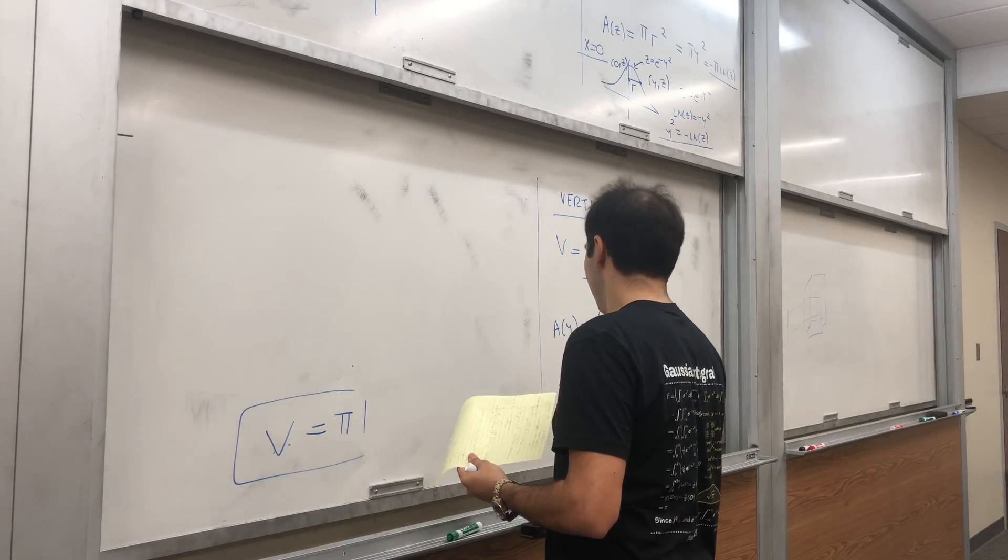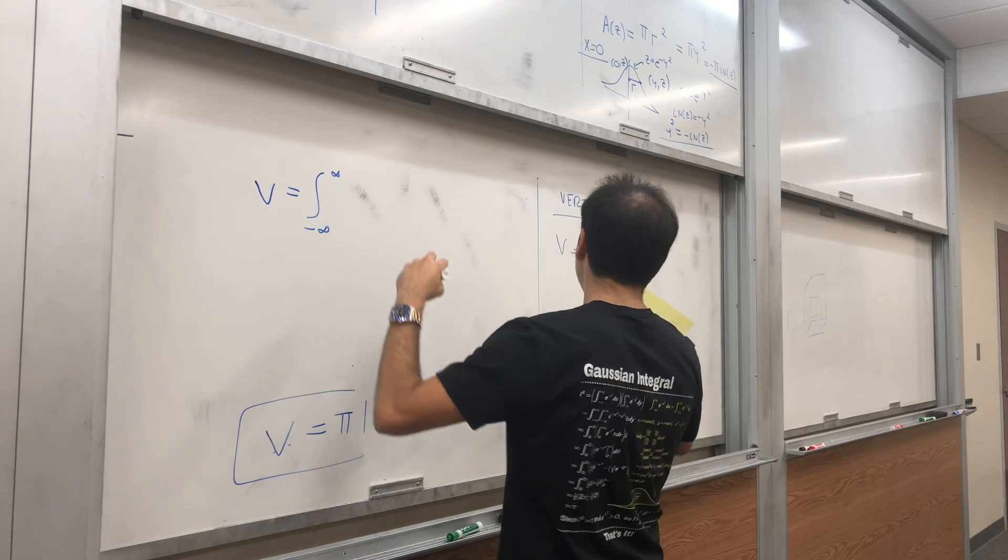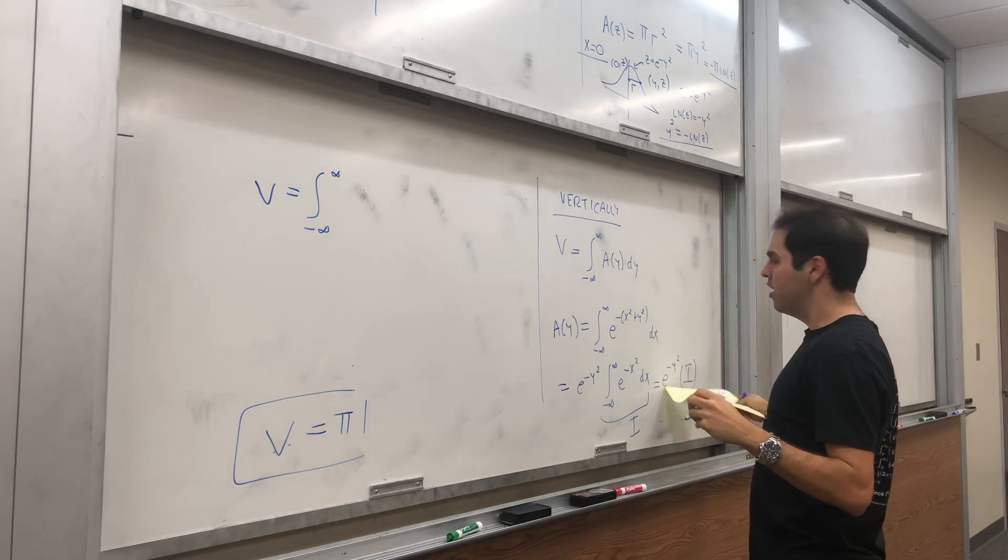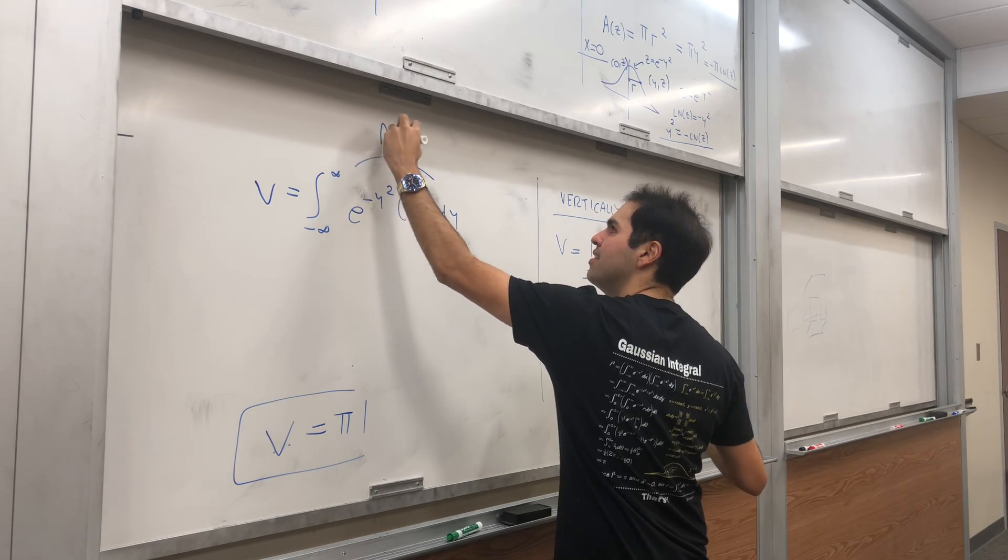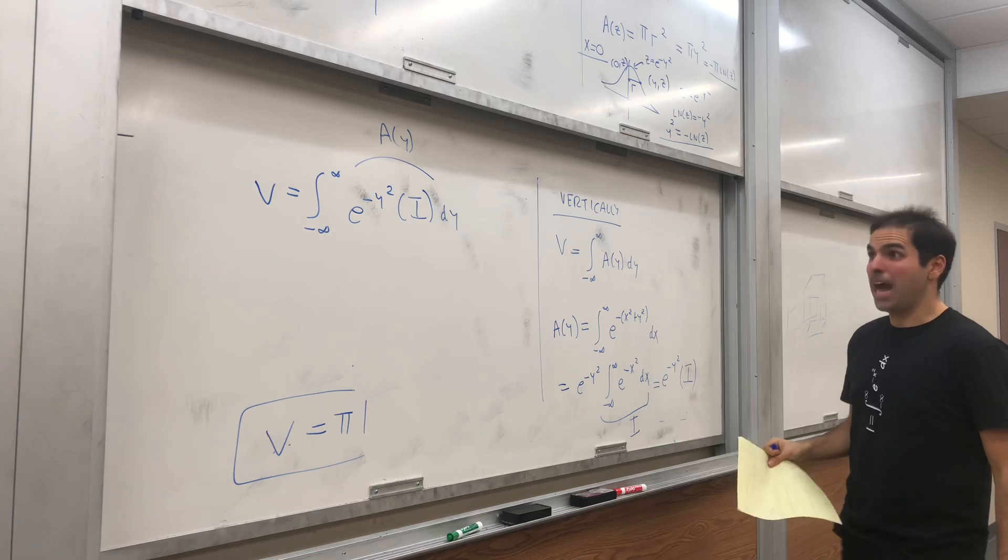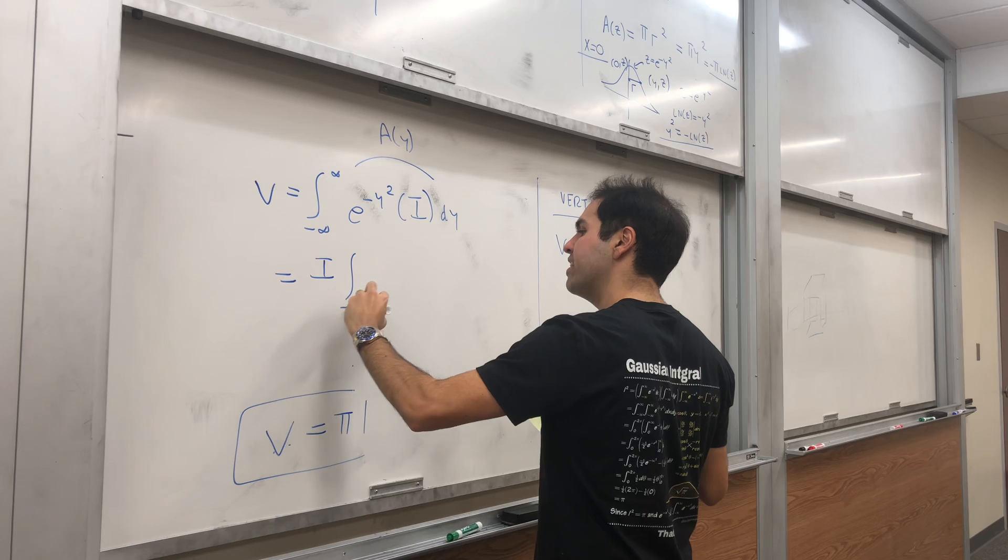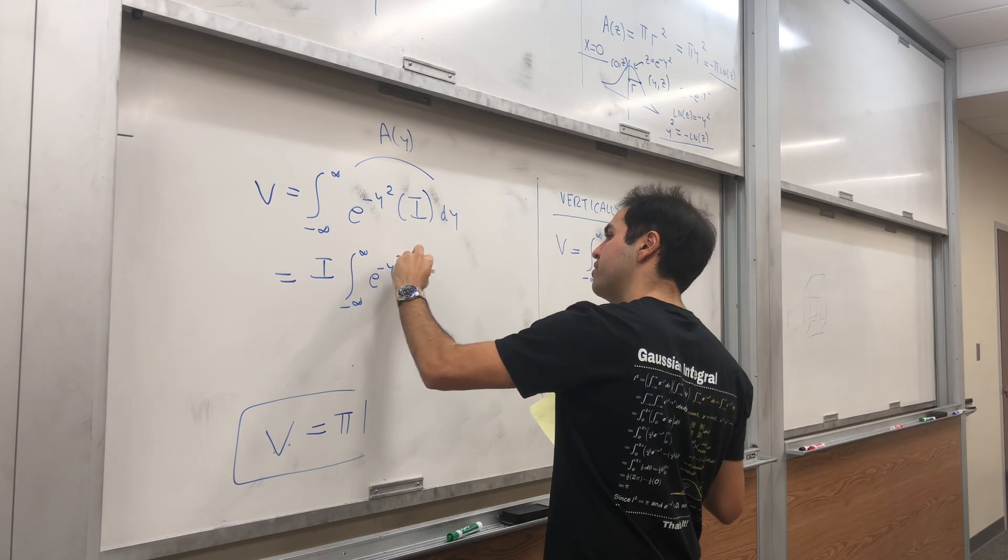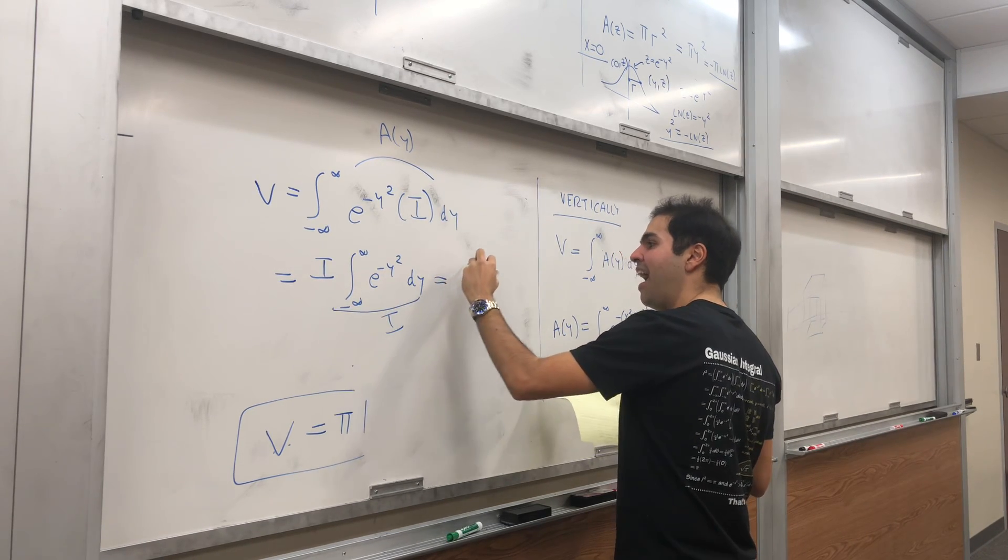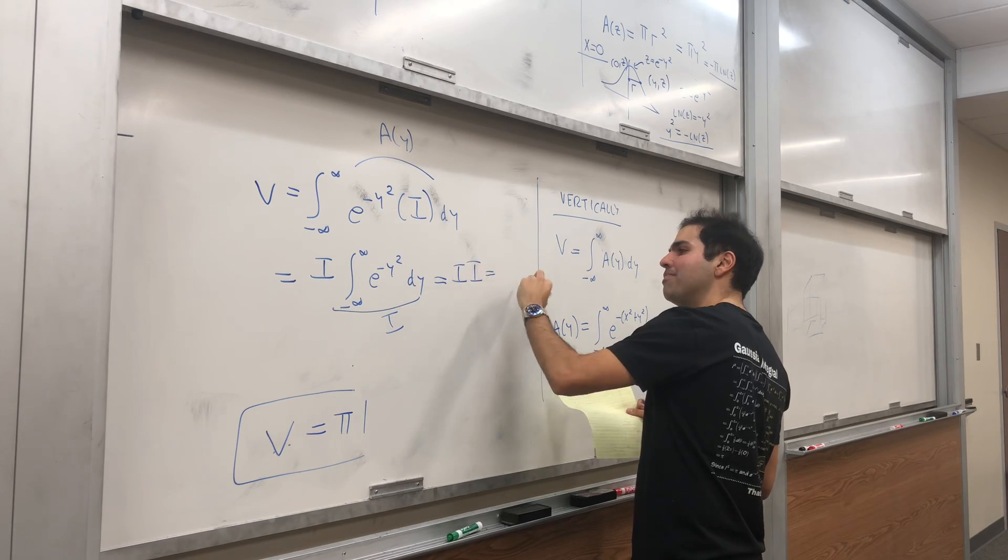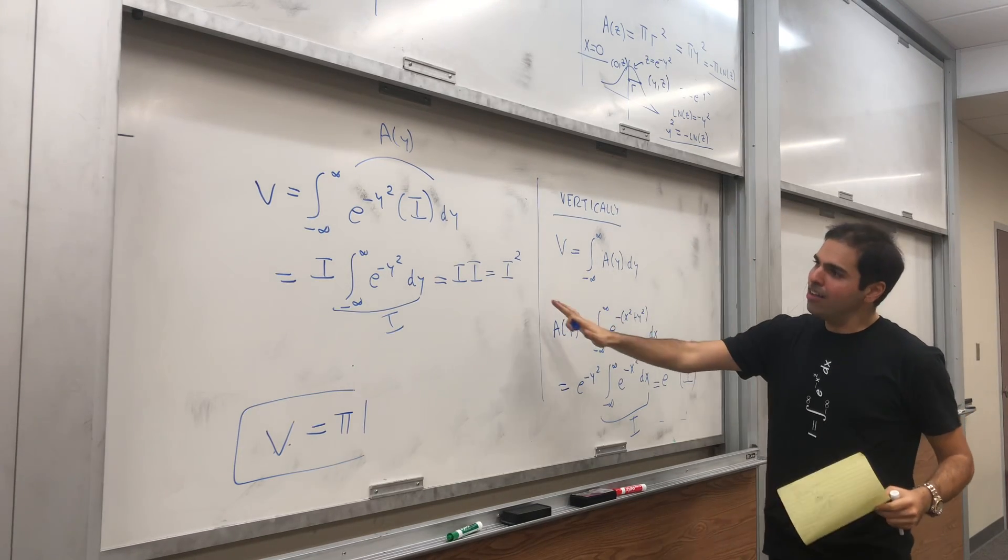To find the volume, we integrate A(y) with respect to y. The volume is the integral from -∞ to ∞ of e^(-y²) · I dy. The I pulls out, and we get I times the integral from -∞ to ∞ of e^(-y²) dy. But this is I again! So we get I · I = I².